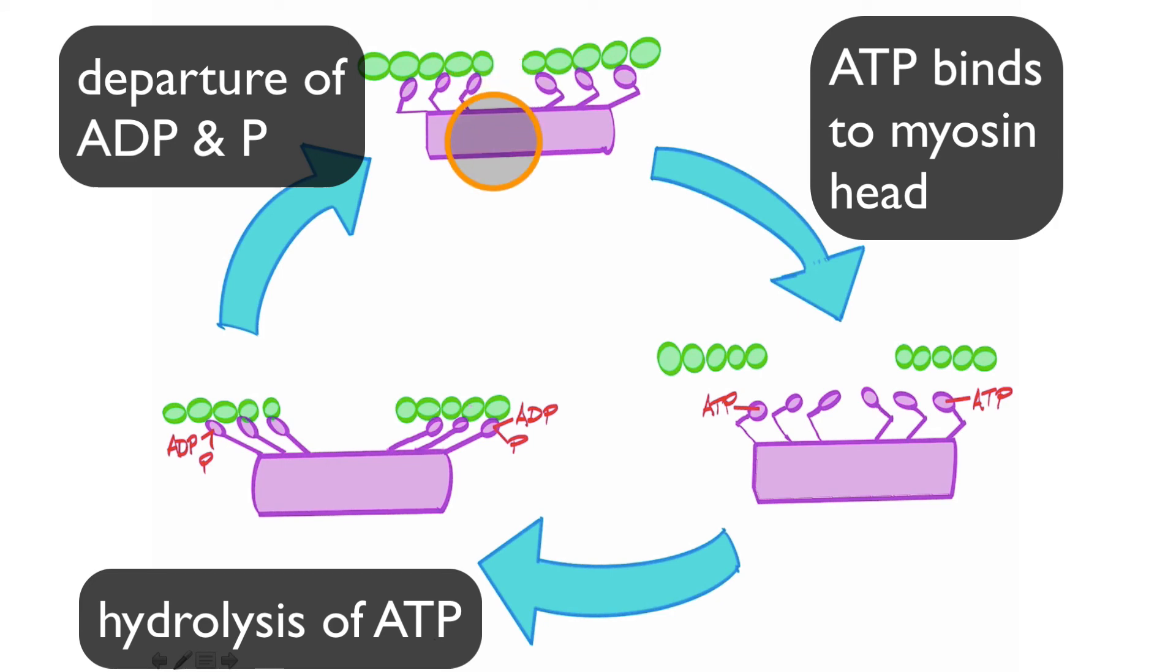Until ATP binds again to the myosin head, the muscle or the filaments are described as being in the rigor state. They're in a very brief period of sustained contraction until ATP rebinds to it, which detaches the myosin heads. ATP hydrolyzes and we get cross bridge formation. ADP and the phosphate departs and we get another power stroke. That is the sliding filament model or theory of muscle contraction.